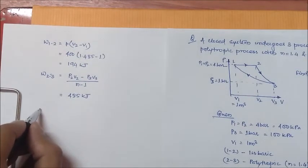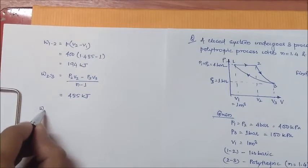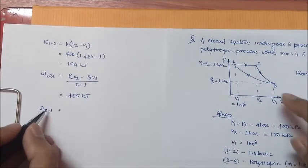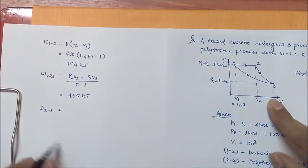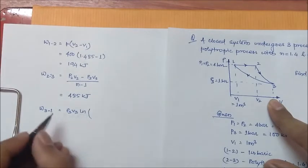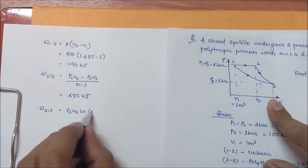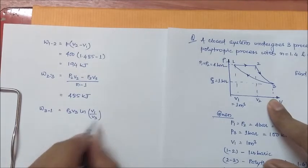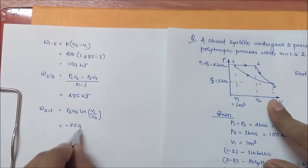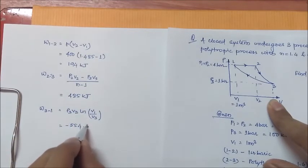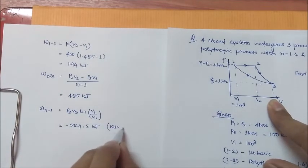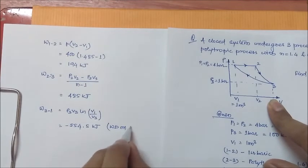The next process is 3 to 1. The work done for the corresponding process, as it is an isothermal process, will be P3V3 ln of V1 by V3. It will come as minus 554.5 kJ. Why this minus sign? Because work is done on the system.